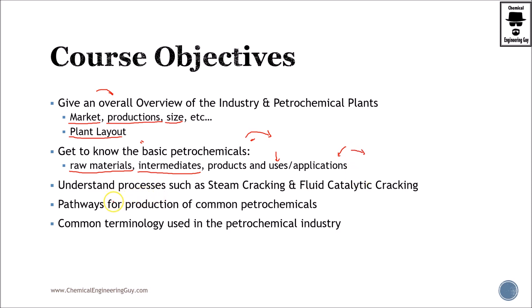Then, very importantly, the most important parts of the petrochemical industry — I would say — are steam cracking and fluid catalytic cracking. Those are our main cracking processes. We're going to see more, but these are the most important ones.